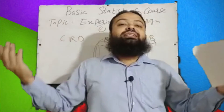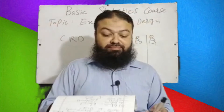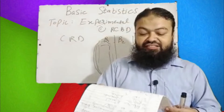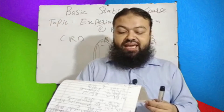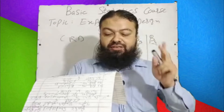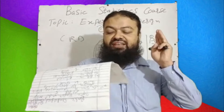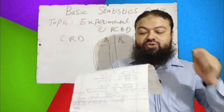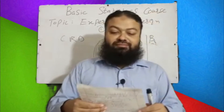Question number three: Randomized Block Design (RCBD) has — a) one-way classification; b) two-way classification; c) three-way classification; d) no classification. The correct answer is b) two-way classification.